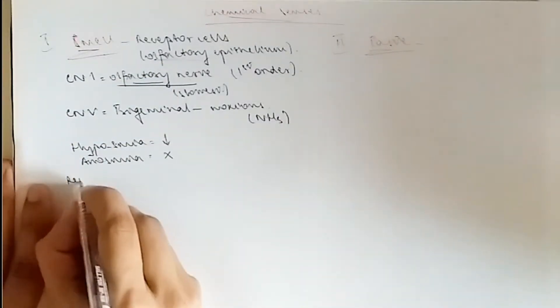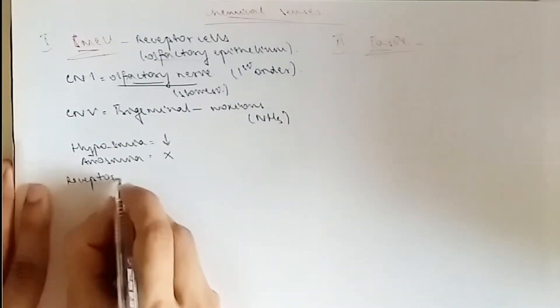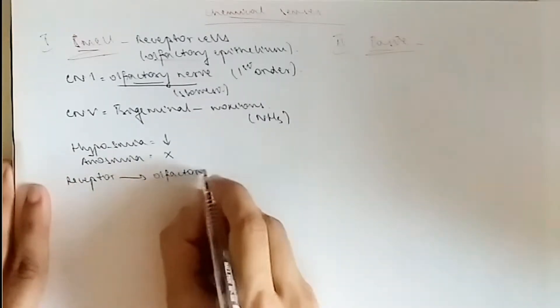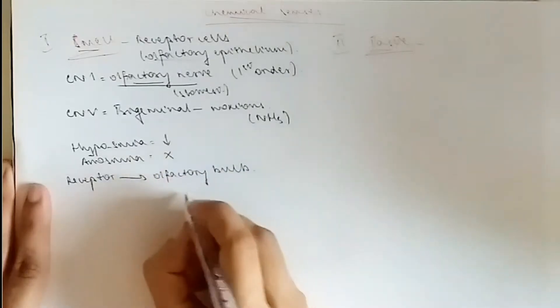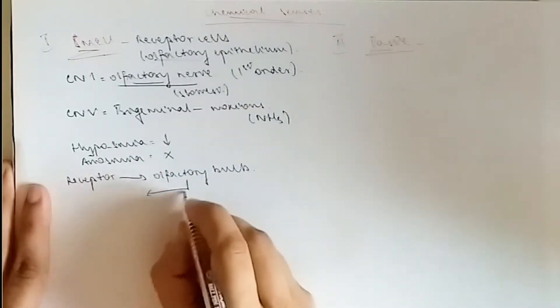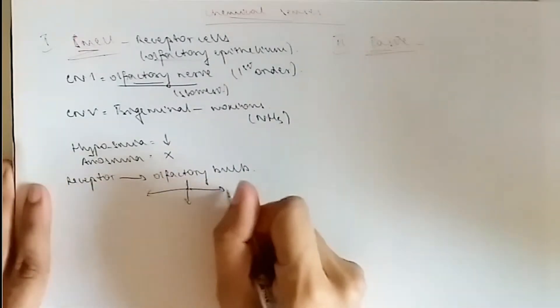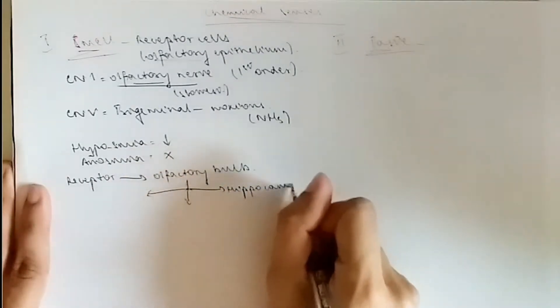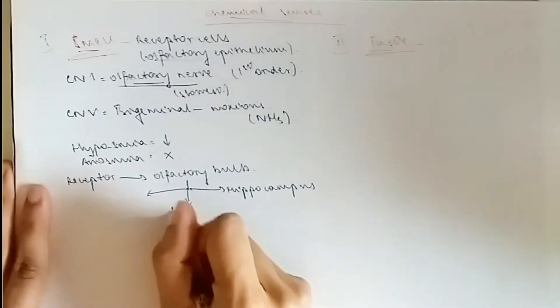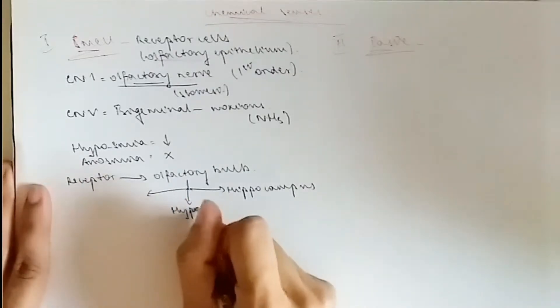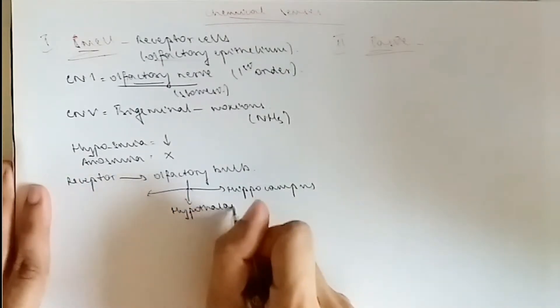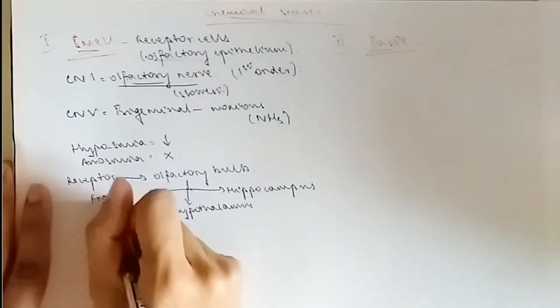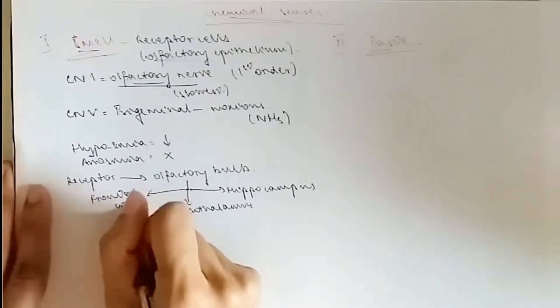The olfactory epithelium was the first one, so that's our receptor, which goes to the olfactory bulb. From there, it goes to three different places. First, we can go to the limbic system, which is the hippocampus, for memory of smell. Then we can go to the hypothalamus and amygdala, which is also part of the limbic system, for emotions attached to smell. And then we go to the frontal cortex, which is the actual perception of the smell.